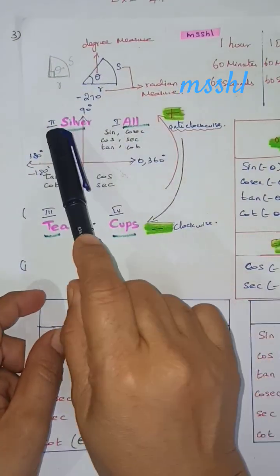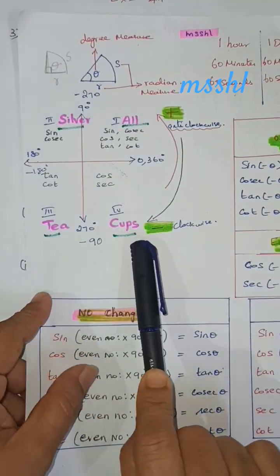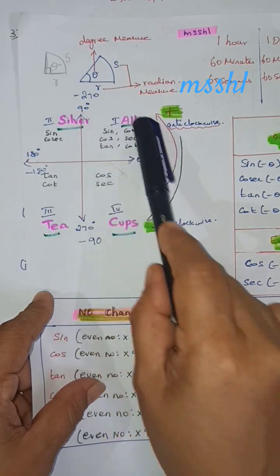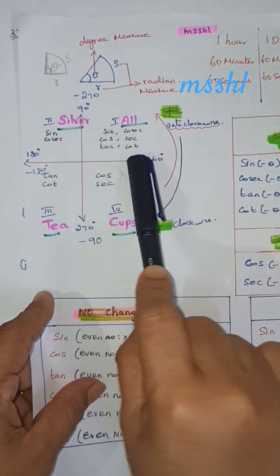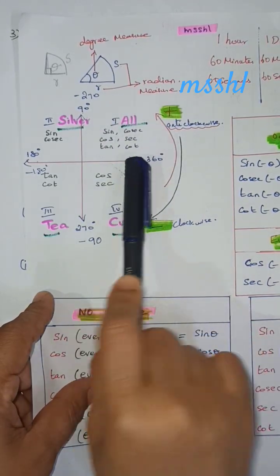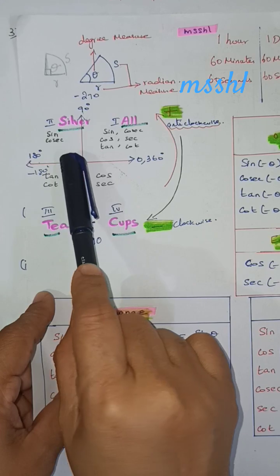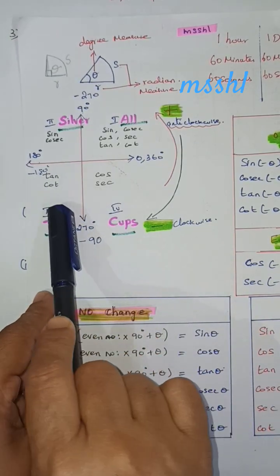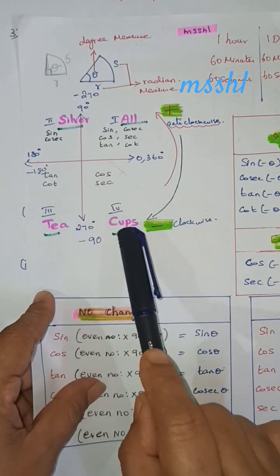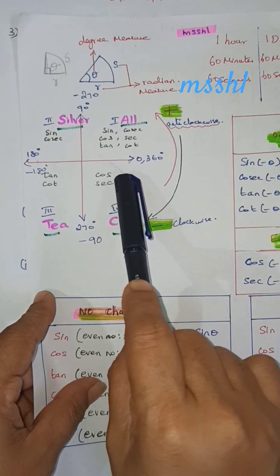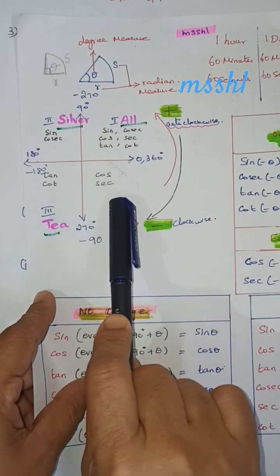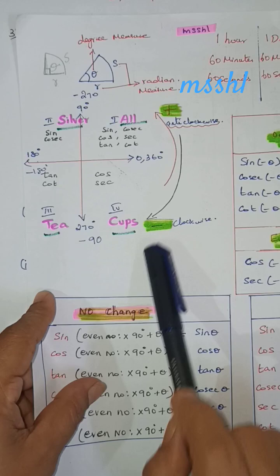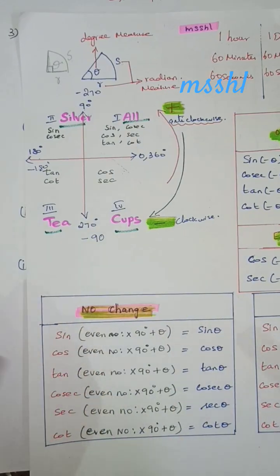First quadrant, second quadrant, third quadrant, fourth quadrant. In the first quadrant, all signs are positive. In the second quadrant, only sine and cosecant are positive. In the third quadrant, only tan and cot are positive. In the fourth quadrant, only cos and secant are positive.